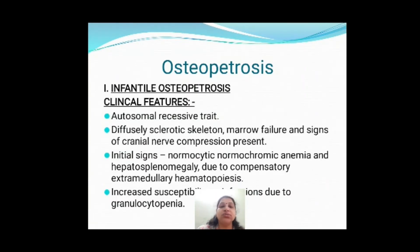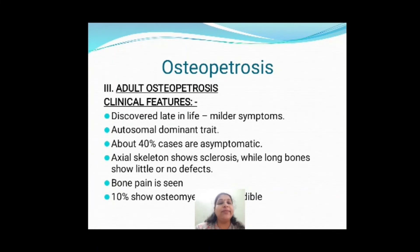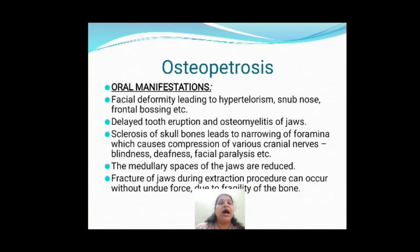The infantile form is an autosomal recessive trait and presents with sclerotic skeleton, bone marrow failure, and signs of cranial nerve compression. The intermediate form is between infantile and adult — affected patients have short stature, are asymptomatic at birth, and the disease manifests towards the end of the first decade of life, with bone marrow failure, hepatosplenomegaly, and cranial nerve deficits. The adult form is discovered later in life with sclerotic bone, bone pain, and 10% of patients show osteomyelitis of the mandible.